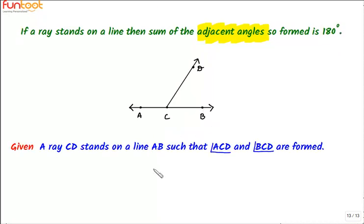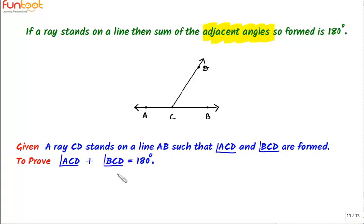For proving this theorem, let's see what is given. A ray CD stands on a line AB, such that angle ACD and angle BCD are formed. We have to prove that angle ACD plus angle BCD is equal to 180 degrees.